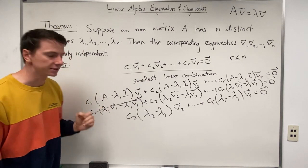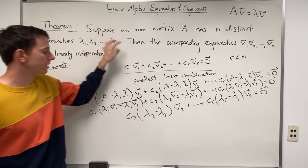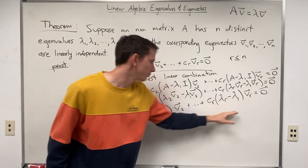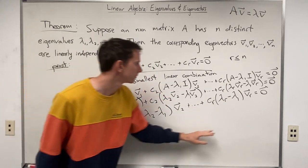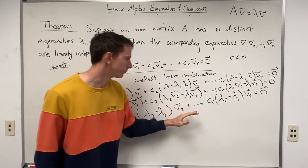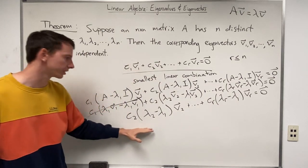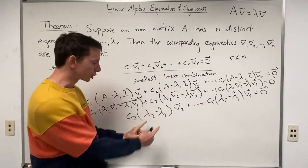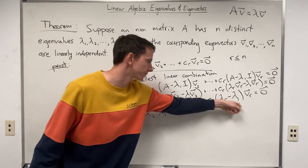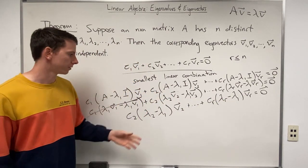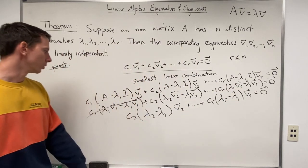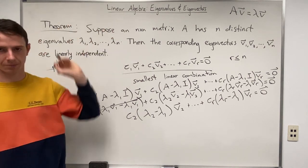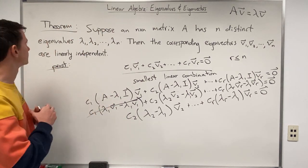This contradiction shows our original assumption that the eigenvectors were linearly dependent is false, forcing them to be linearly independent. This only works because the eigenvalues are distinct, ensuring that each coefficient (λⱼ − λ₁) in the shorter combination is non-zero. We could have chosen any eigenvalue λₖ to apply this argument, not just λ₁.